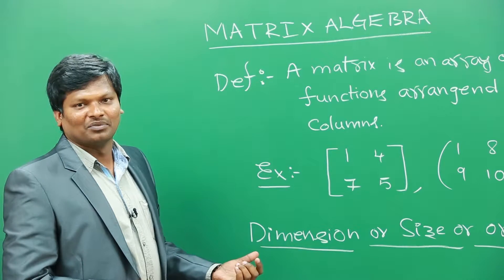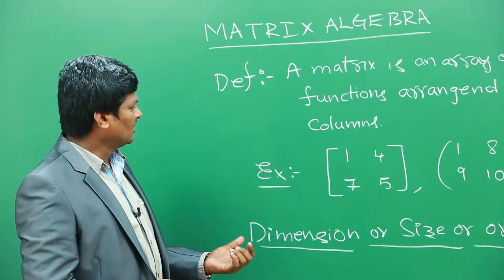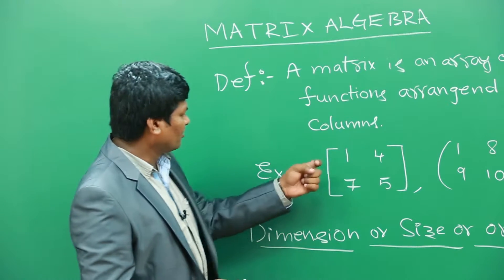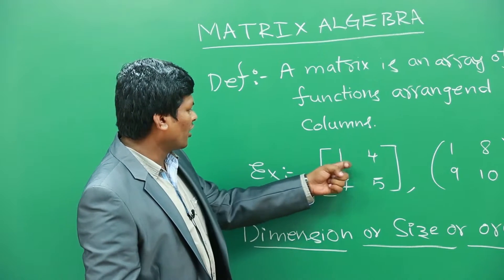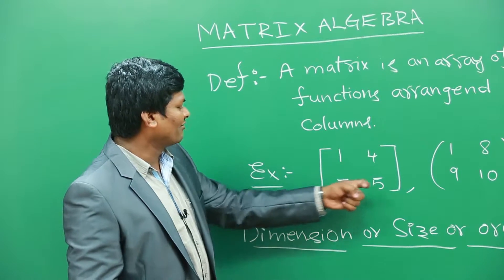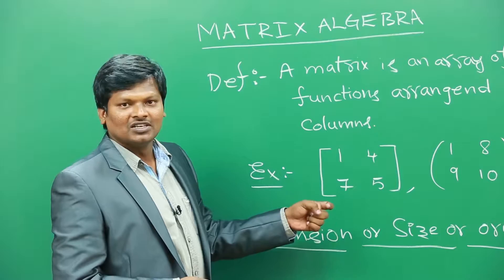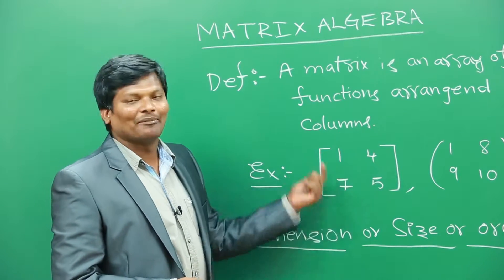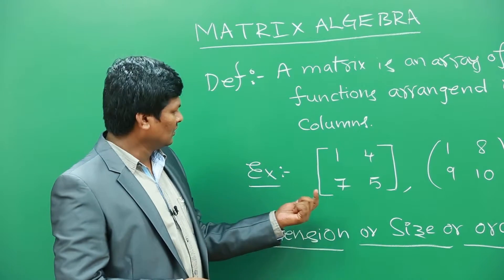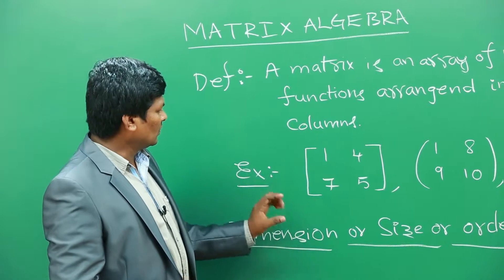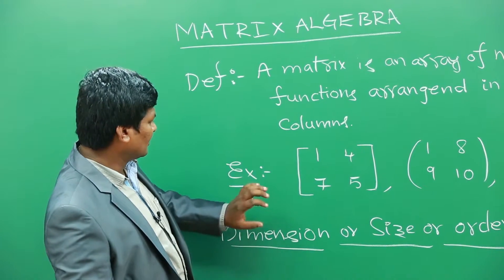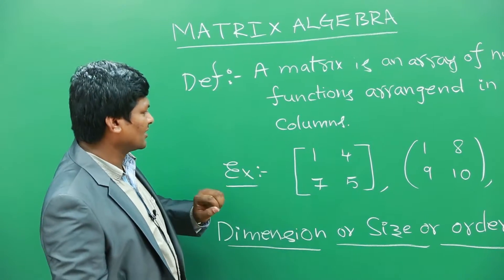Let us look at a few examples. Here I have numbers 1, 4, 7, 5, and I am representing them in a matrix. So this is a matrix.